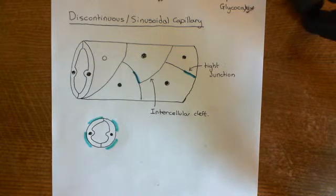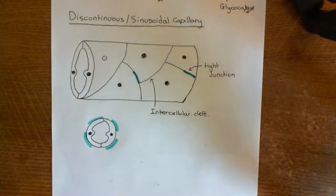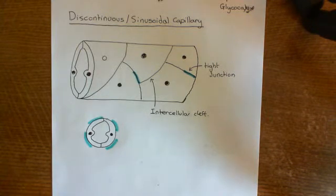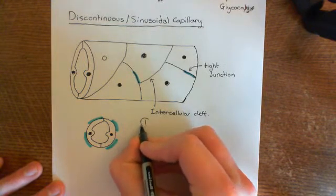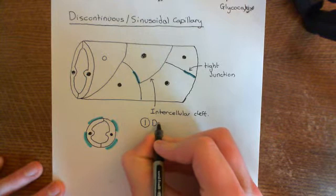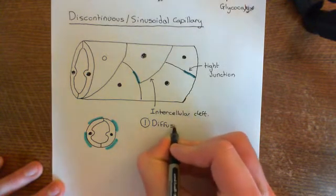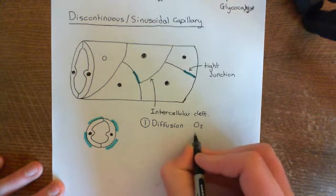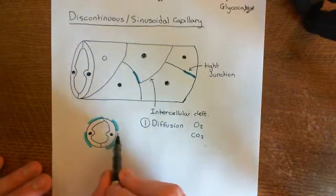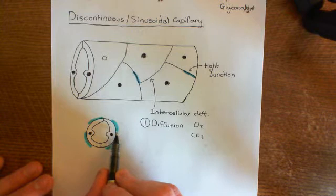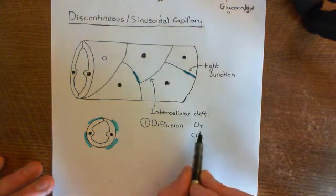Now let's discuss the mechanisms by which you can transport things out of the blood into the tissue fluid. One mechanism that applies for all of these cells is that you can just get diffusion right across the endothelial cells. The bare essentials such as oxygen and carbon dioxide can use this mechanism — they can just diffuse straight across the endothelial cells because they are completely non-polar molecules, which means they can move through the phospholipid bilayers easily.